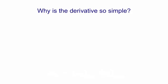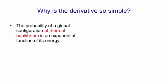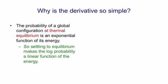One obvious question is why is the derivative so simple? Well, the probability of a global configuration at thermal equilibrium, that is once you've let it settle down, is an exponential function of its energy. The probability is related to e to the minus energy. So when we settle to equilibrium, we achieve a linear relationship between the log probability and the energy function.